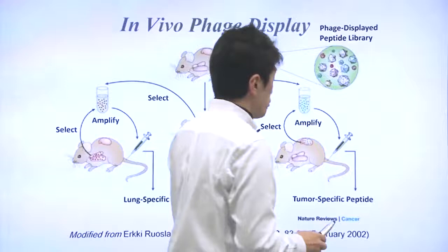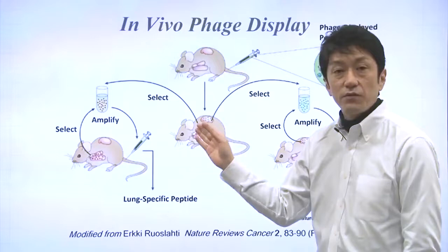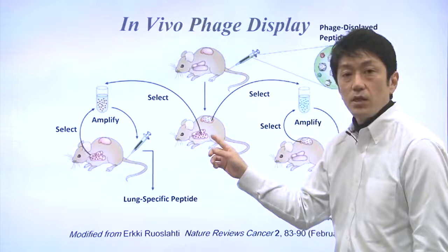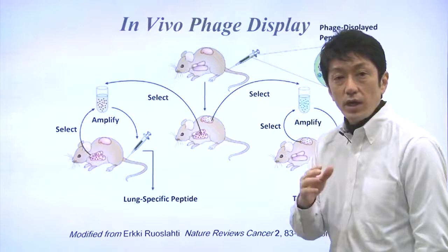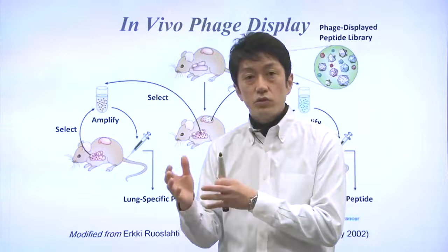In addition to tumors, phages can also be extracted from different organs to find peptides that are organ-specific. For example, if you are interested in lung-specific peptides, you can extract phages from the lungs. Today, many peptides are known to accumulate in different organs and malignant tumors. In theory, these peptides can be used to deliver drugs to cancer or specific organs.